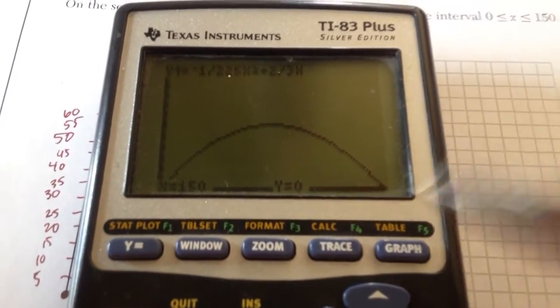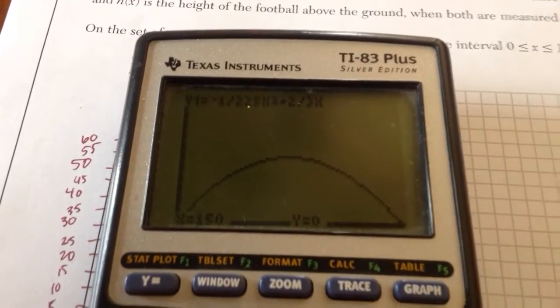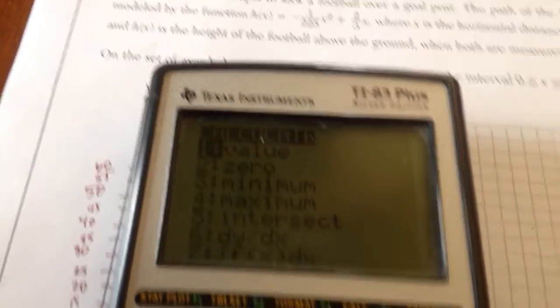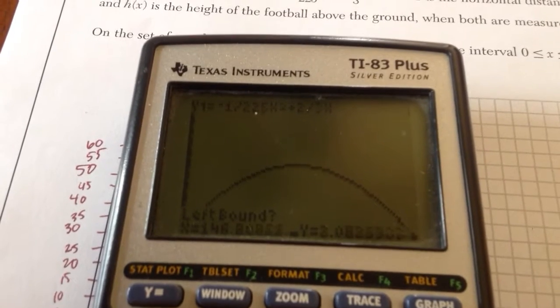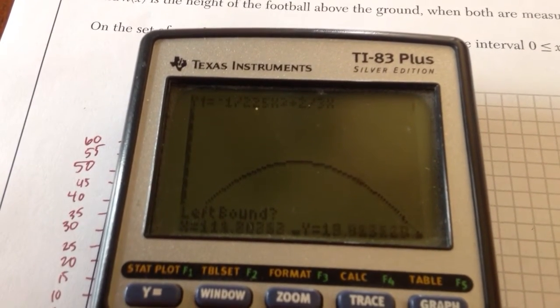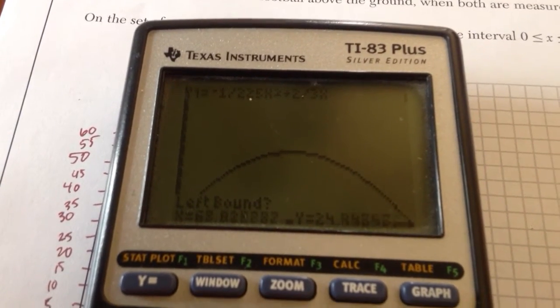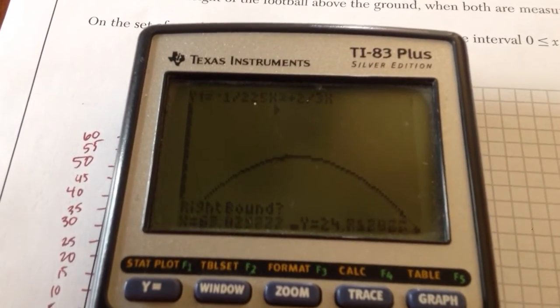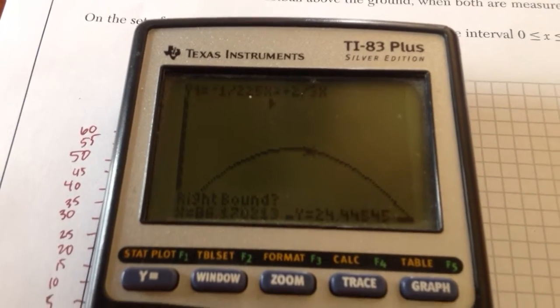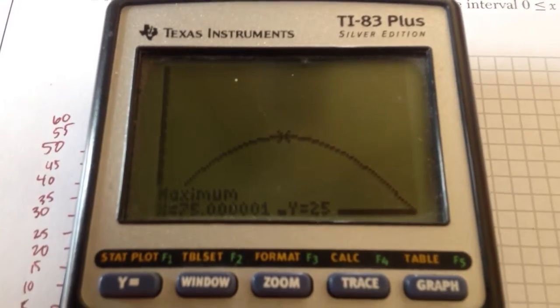So what I want to do, because a parabola is symmetrical, I want to find that halfway point. Where is it reaching its highest point? So if I go to calculate, and I go to maximum, I move my cursor to the left of the highest point, then move my cursor to the right of the highest point by hitting enter, hit enter on guess, and it says the point 75, 25.